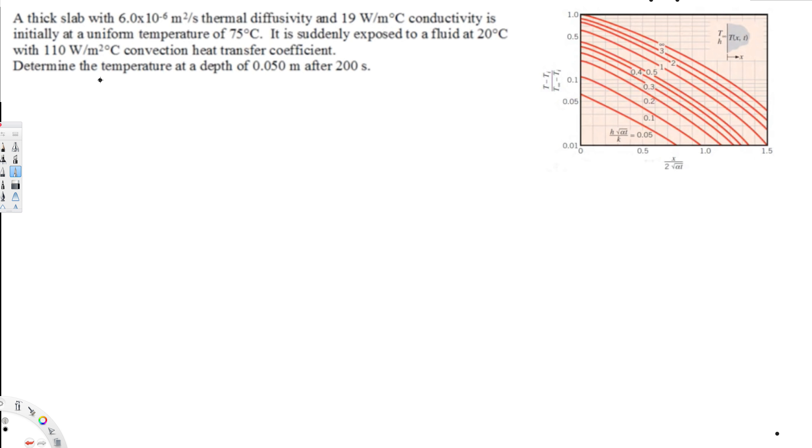Now here the question is for the temperature, that's what we are trying to find. In order to do this, first we have to find the similarity variable and these two values because we are going to use this table. The similarity variable is this equation: x over 2 square root of alpha t.